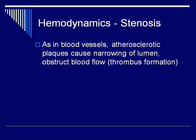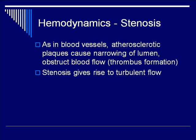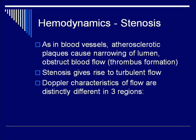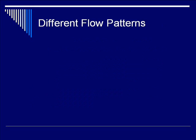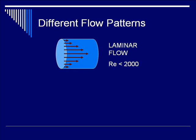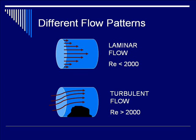When we talk about stenosis, we usually refer to atherosclerotic plaques causing narrowing of the lumen and obstructing blood flow. Not surprisingly, stenosis gives rise to turbulent flow. This turbulent flow has distinct Doppler characteristics prior to, at, and distal to the stenosis, which we'll expand on in the Doppler lecture. Laminar flow occurs when there is no obstruction and the vessel is relatively patent, with blood cell velocity being higher in the middle of the vessel compared to the edge. In turbulent flow, due to stenosis, the velocity distribution is much wider.